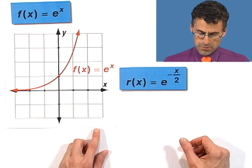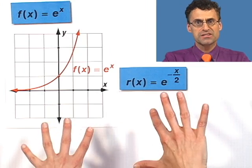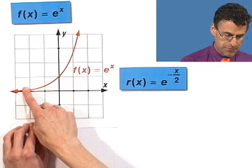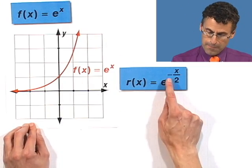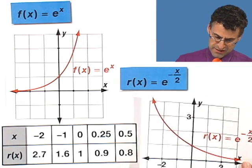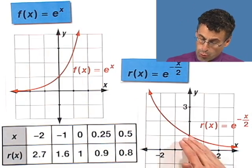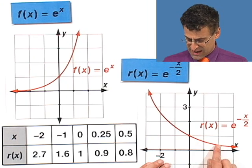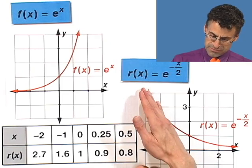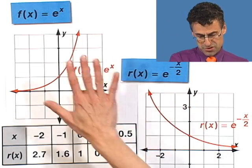Let's look at e to the power negative x over 2. The dividing by 2 will have the opposite effect of multiplying by 2 — it's going to dampen things. So it's going to go to the x-axis slower and go to infinity slower. But that negative sign will flip everything. It's exactly what we predicted: first of all, it's the flip, but more importantly it's much more gradual — a very gentle function. It's going down to the asymptote now on the positive x-axis, but going up much less dramatically. That's what happens when you dampen by dividing by a constant like 2, and the negative sign just flips it as we saw before.